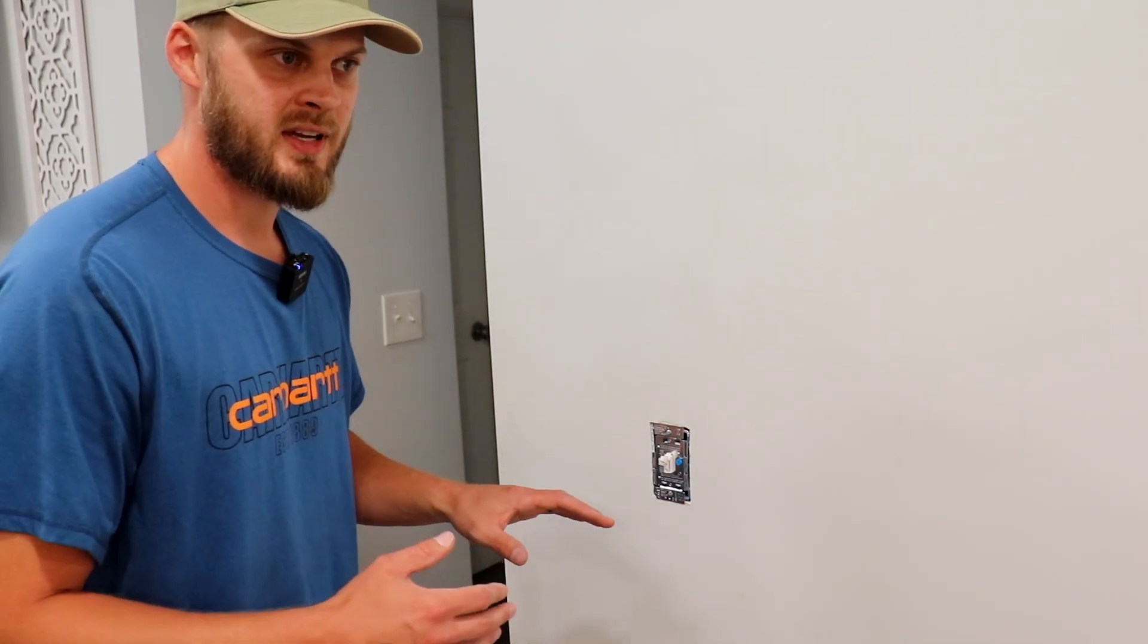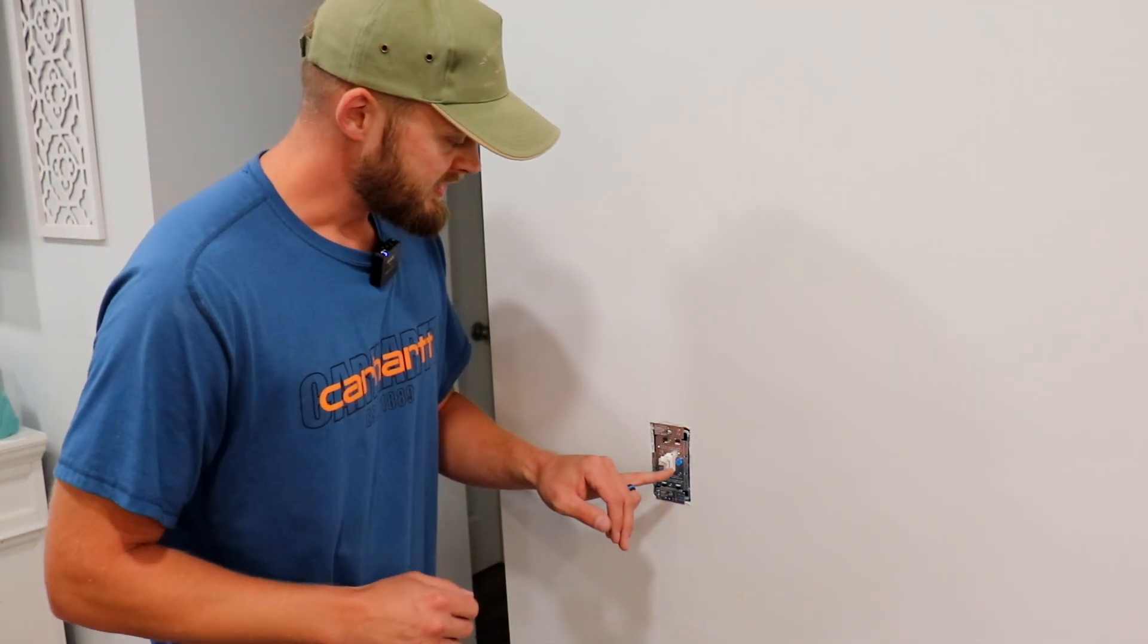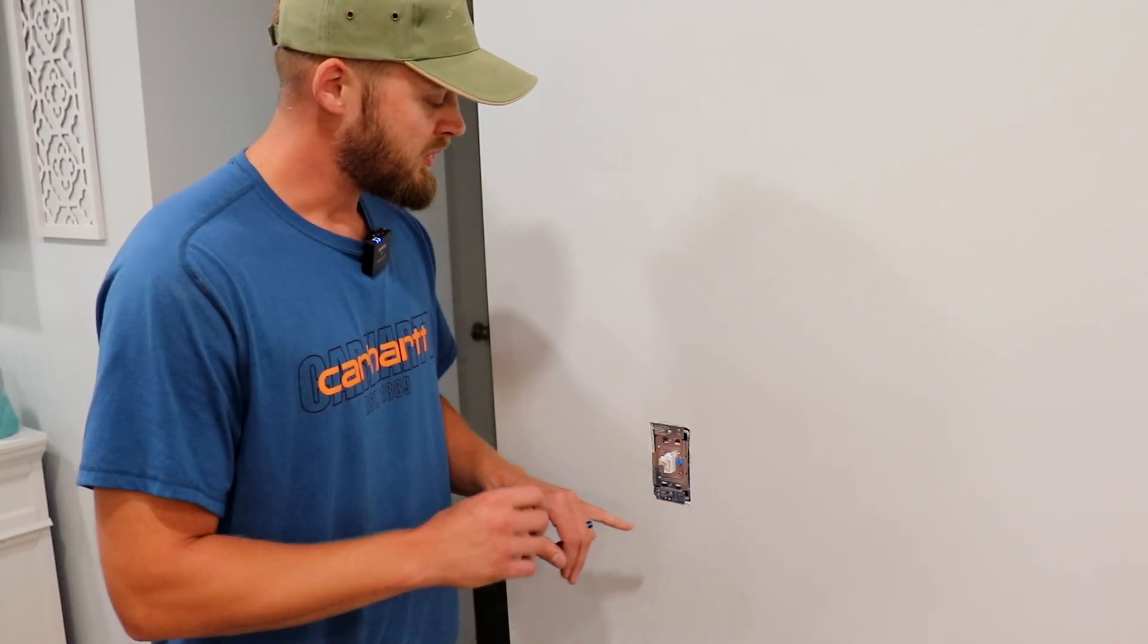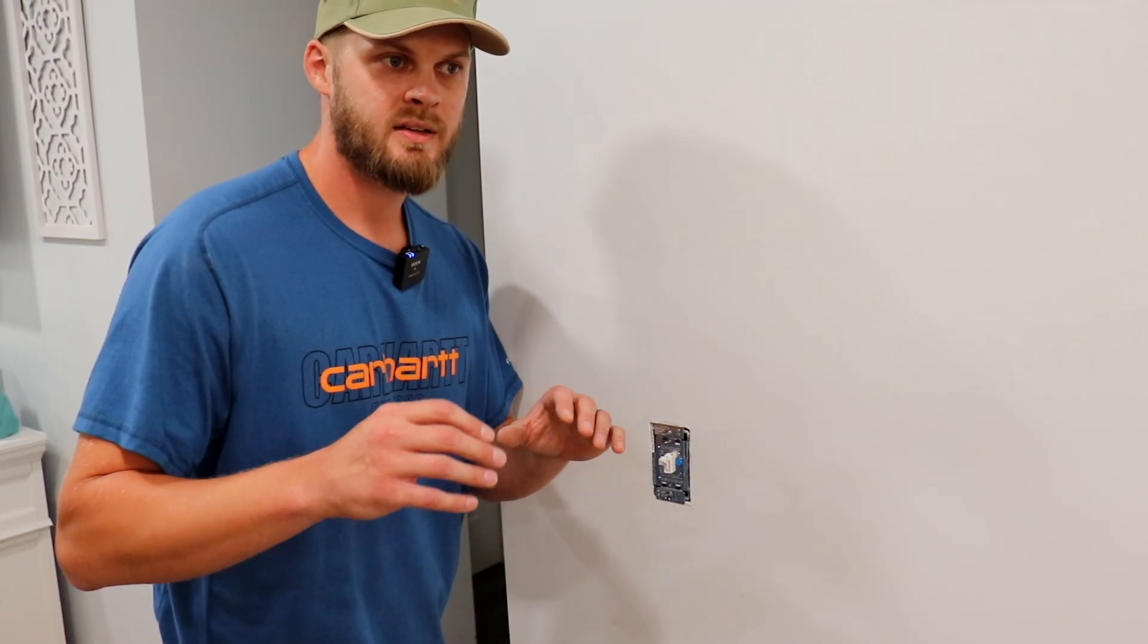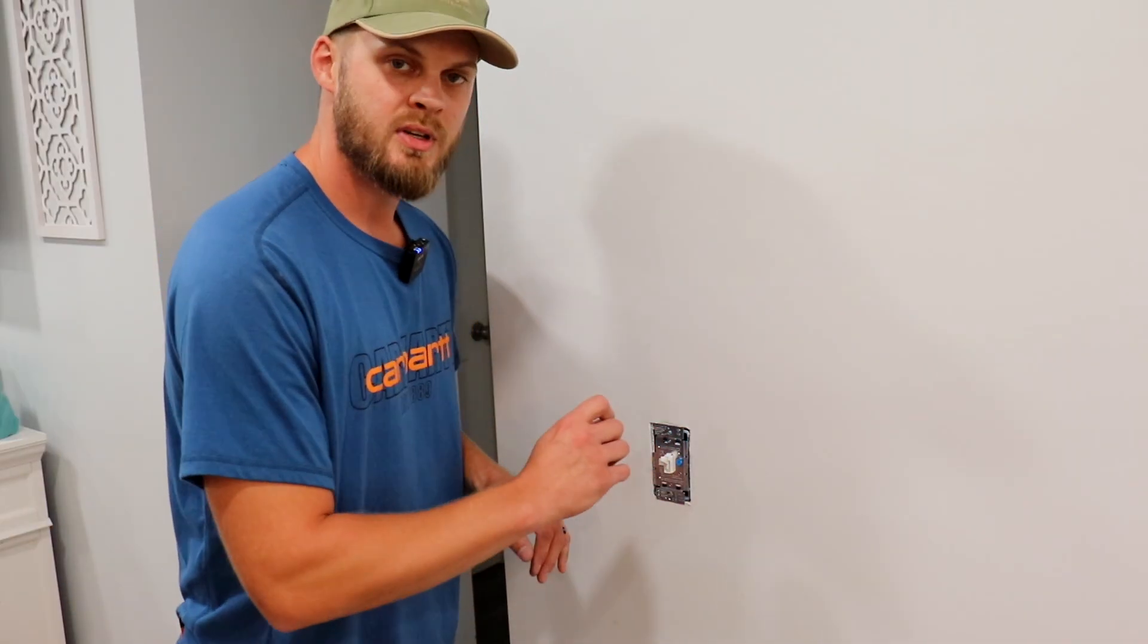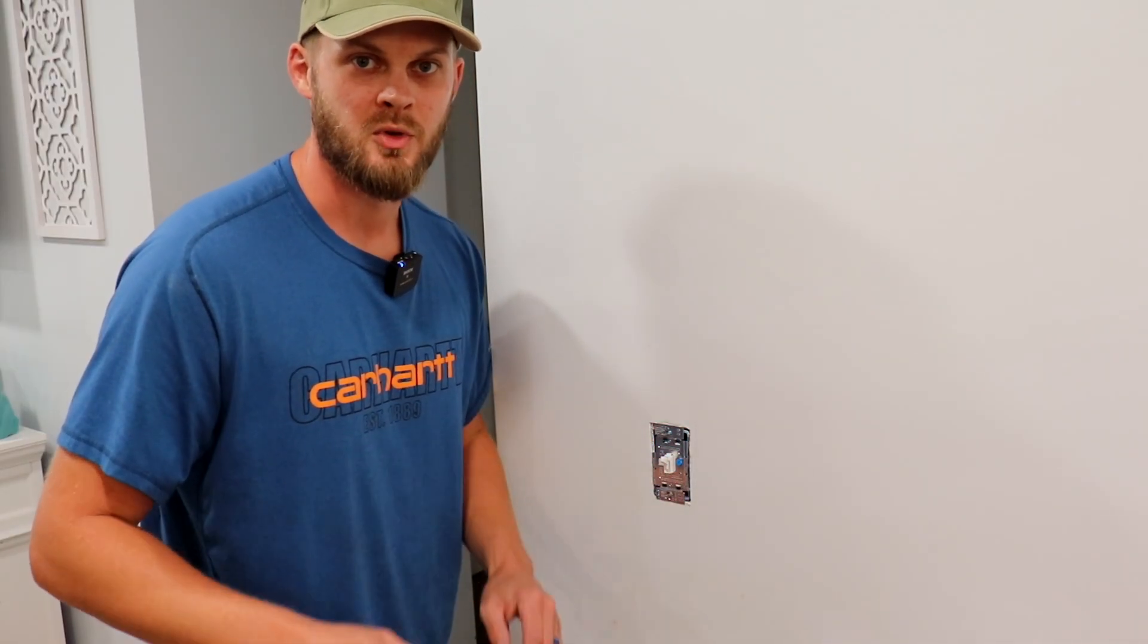Now you may not be able to see the effect of that much on camera because we do have other lights on in the house. But another thing I wanted to point out is that this switch has this little blue tab that you can adjust. And what that's for is if you've got any lights that are flickering after you've installed your dimmer switch, you can adjust that to the left or right, and that's going to help take care of that issue for you.